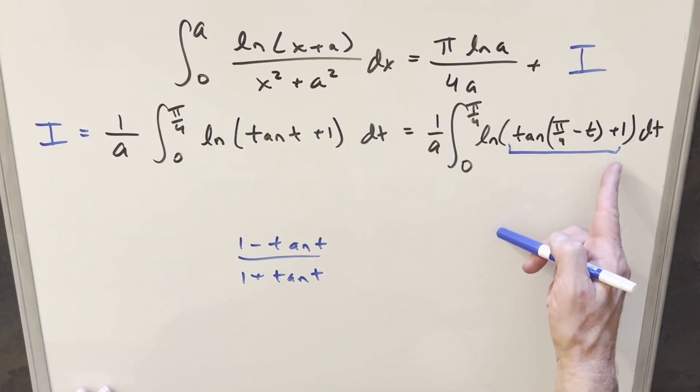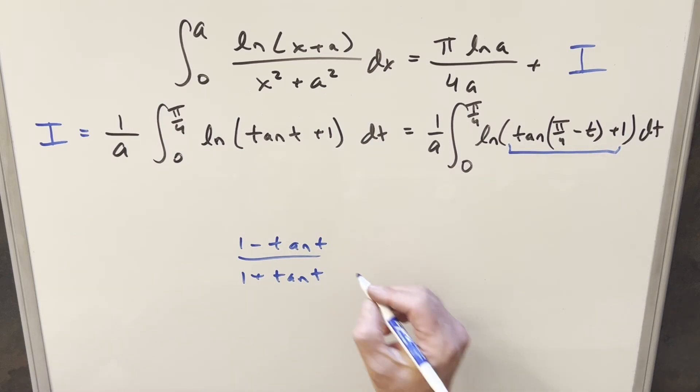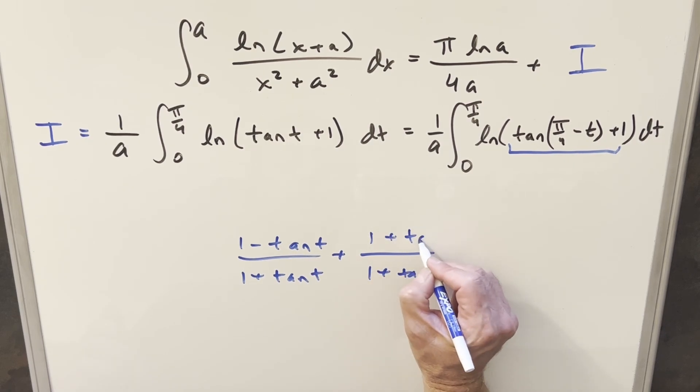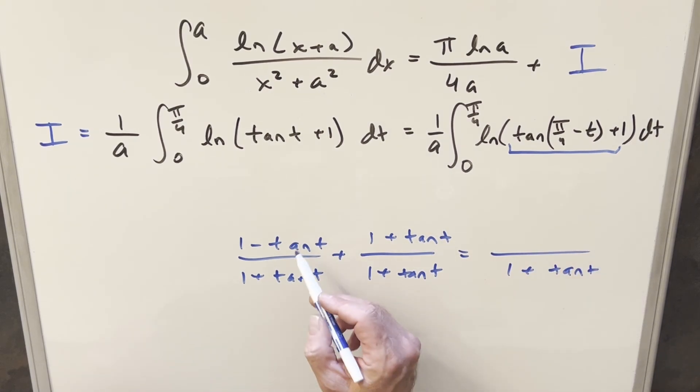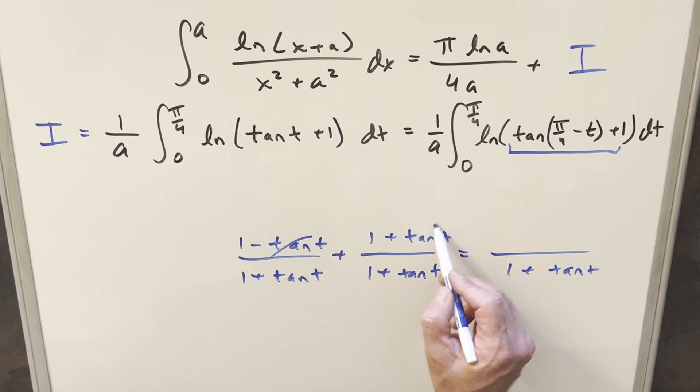But now for more simplification, what I want to do is bring in this plus 1, and what we can do is get a common denominator. For the 1, I can write it as 1 plus tan t over 1 plus tan t like this, so we're not changing anything. And then with the common denominator, we have this all over 1 plus tan t. But then when we do that, tan t minus tan t, those are going to cancel, 1 and 1, that gives me 2.